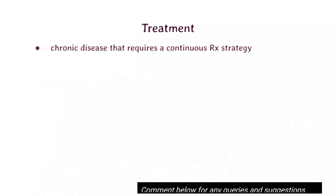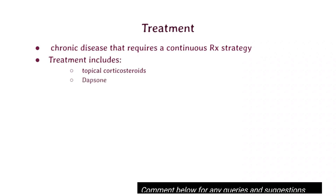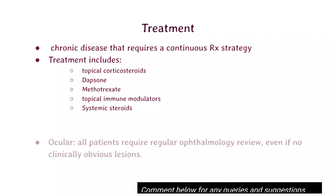This is a chronic disease requiring a continuous treatment strategy. Treatment includes topical corticosteroids, and depending on the condition of the patient, options vary from dapsone, methotrexate, and topical immunomodulators. Depending on symptoms, systemic steroids with or without azathioprine or other immunomodulators may also be needed.